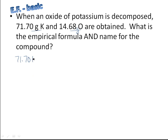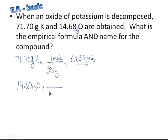So 71.70 grams of potassium, and I want to convert to moles. So I'm going to look on the periodic table, and I'm going to see that potassium is 39.1 grams. Do the math, and you end up with 1.833 moles. It's good to keep a lot of sig figs here. The more numbers you go out to the right of the decimal, the better off things are going to be when you divide through. 14.68 grams of oxygen, 16.0 is the molar mass of oxygen, one mole on top. Divide through, and you get 0.9175 moles.